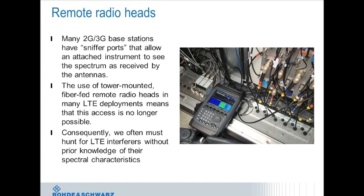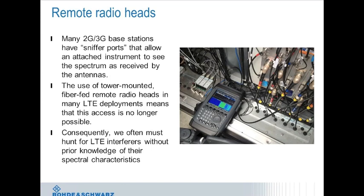In interference hunting for cellular networks, the base station is a great starting point. Many 2G and 3G base stations have RF sniffer ports allowing you to see the spectrum as the base station antennas see it. However, many LTE deployments use remote radio heads (RRHs), where electronics are mounted on the tower and data is carried to the ground over fiber. In RRH systems, we often cannot see the interferer from the ground, and we may not know what kind of signal we're looking for, requiring us to drive the sector searching a wide frequency span.